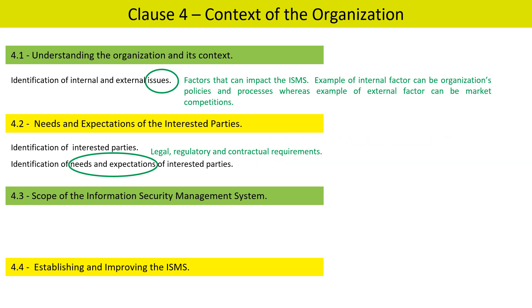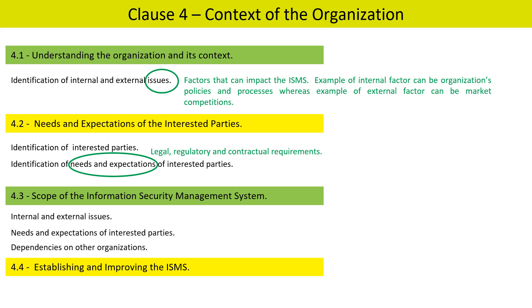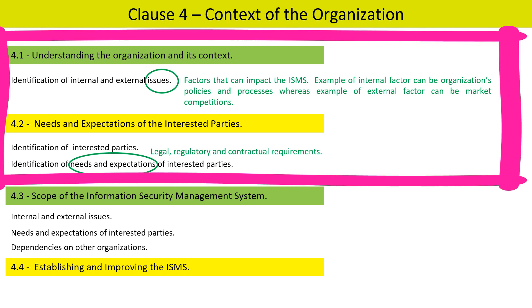Clause 4.3 is about determining the scope of the information security management system. The scope is based on three factors: first, internal and external issues as identified in Clause 4.1; second, requirements of the interested parties as identified in Clause 4.2; and third, dependency on other organizations. From these three points, the scope of the information security management system is finalized.